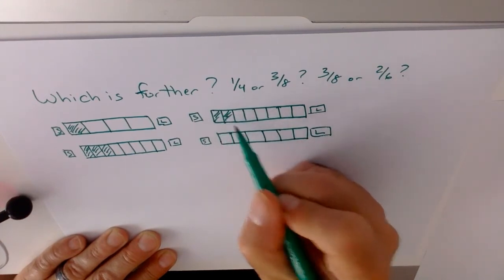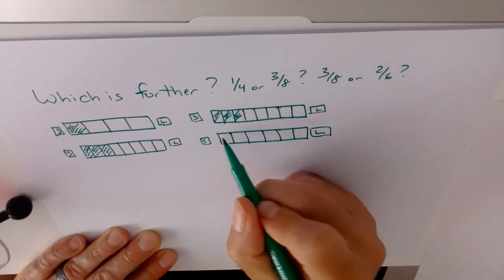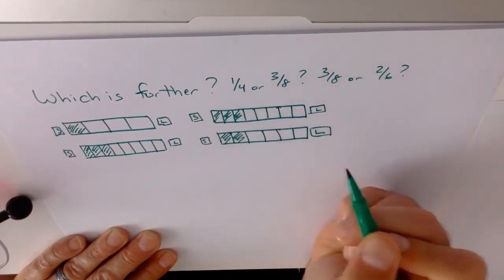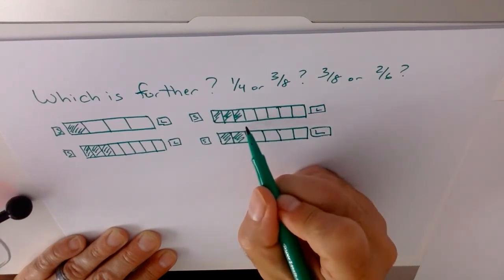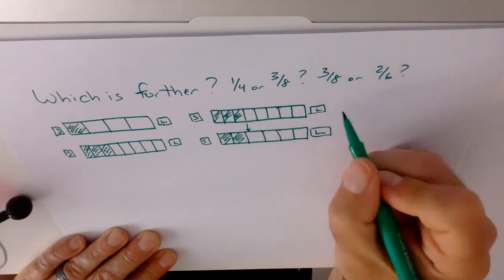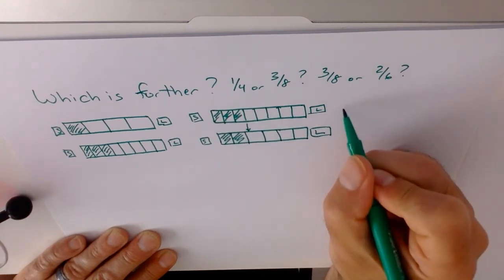This way when we do 1, 2, 3 eighths, and 1, 2 sixths, we see that 3 eighths is just a little bit further than this. And we know this mathematically to be true.